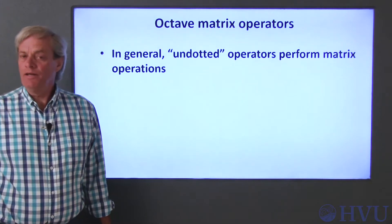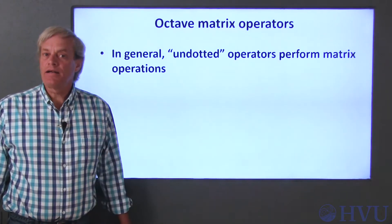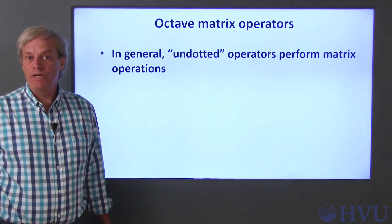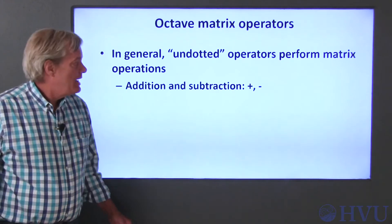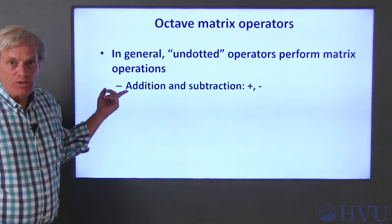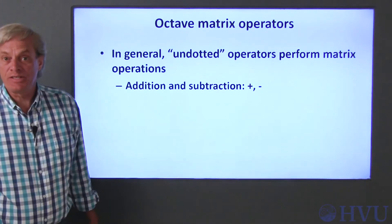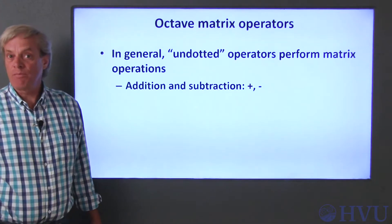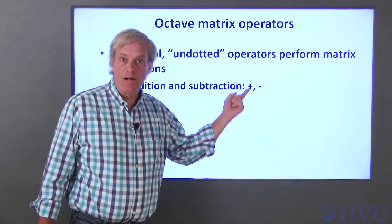Octave has operators that are dotted, preceded by a period, and undotted. The undotted operators perform matrix operations. These operators are the focus of this video. To add and subtract matrices, use the plus and minus signs. Addition and subtraction are the same process for array and matrix operations. So we only have one set of addition and subtraction operators.